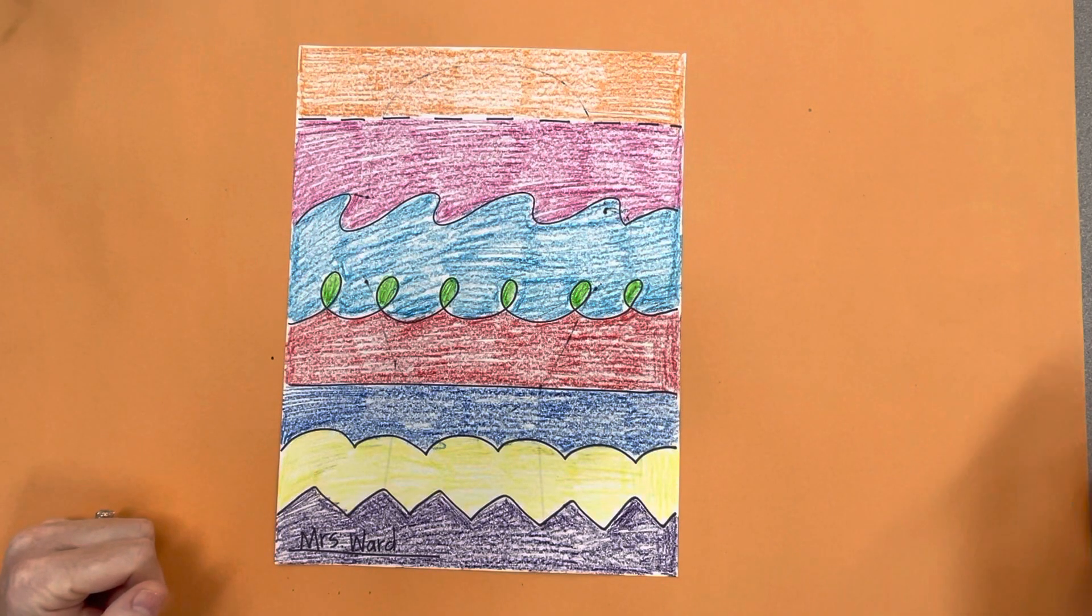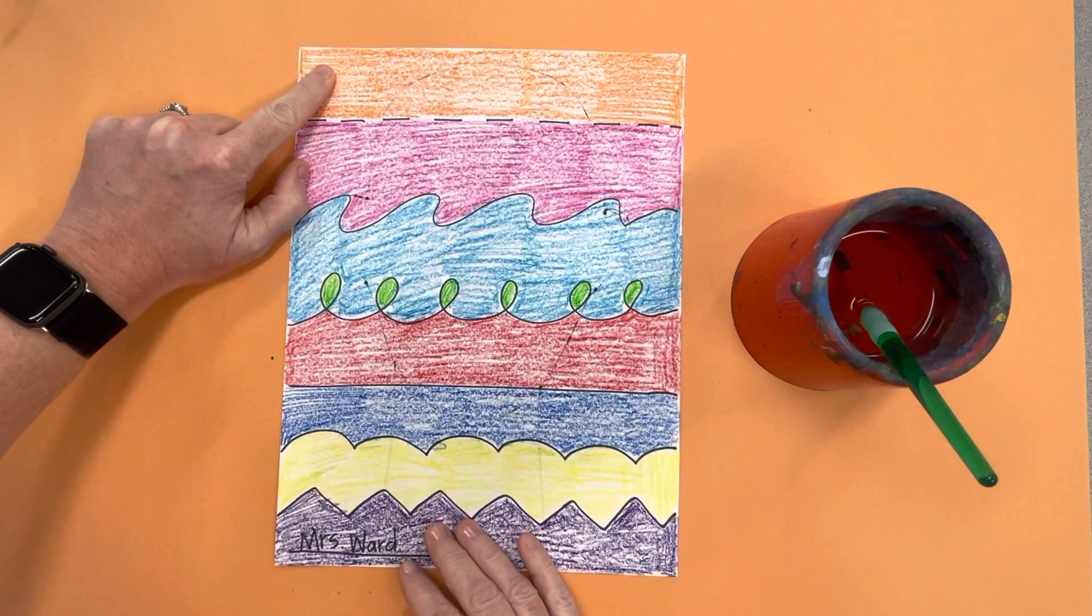The next thing we need to do is brush over our watercolor crayon with water and a paintbrush. So you're going to start in the top section. Remember, watercolor crayons are just like crayons, but when you brush over them with water they turn into paint.